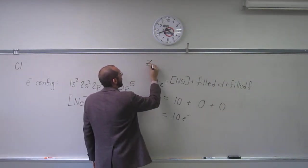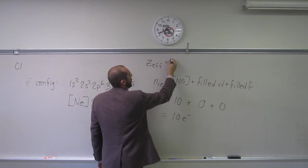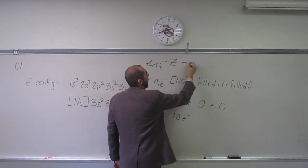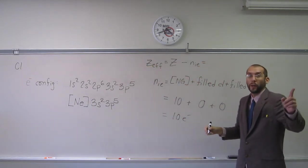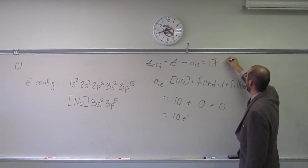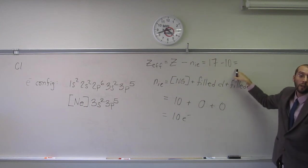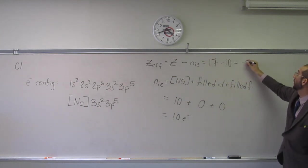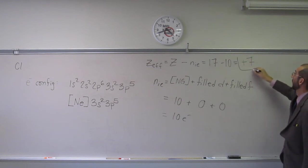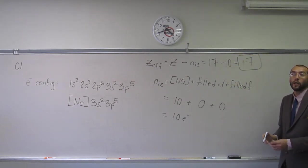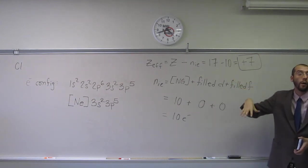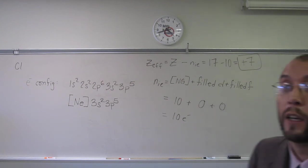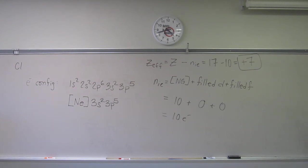And so, the effective nuclear charge, remember, what did we say? It was the atomic number minus the number of inner electrons. So do we have the atomic number? Yeah, we get that from the periodic table. Seventeen minus inner electrons is ten. So the overall effective nuclear charge is plus seven. So what you see is that the inner electrons actually shield the nucleus from exhibiting its full nuclear charge, if that makes sense. The valence electrons don't do anything.